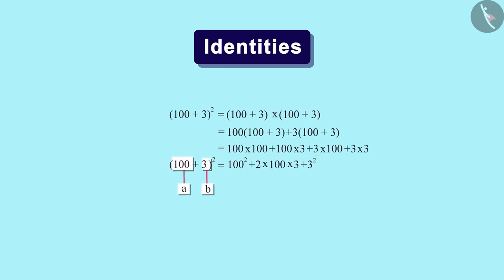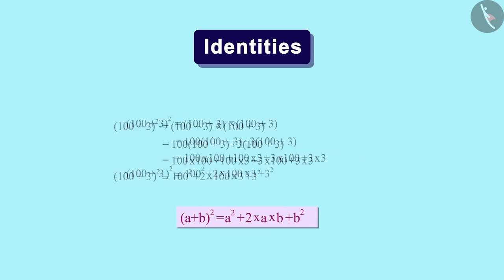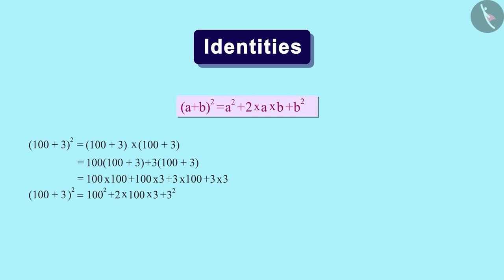Now suppose we have replaced 100 with variable A and 3 with variable B on both left and right-hand sides. We will get this form. By using this, now we can find the square of decimal numbers. Let's consider the example 6.2 square. We will divide 6.2 into two simple numbers, 6 and 0.2.